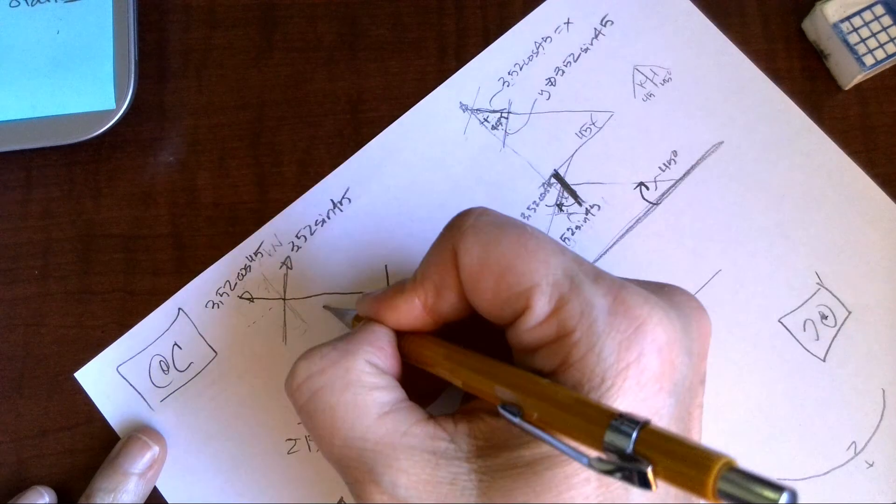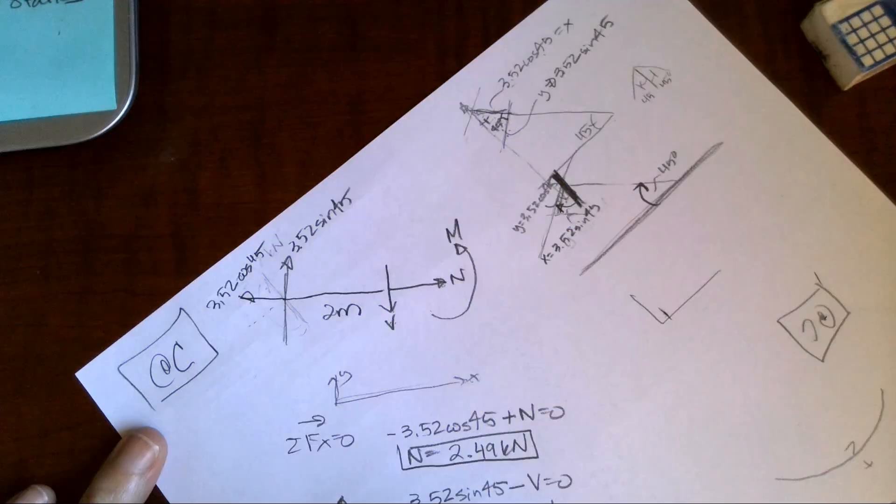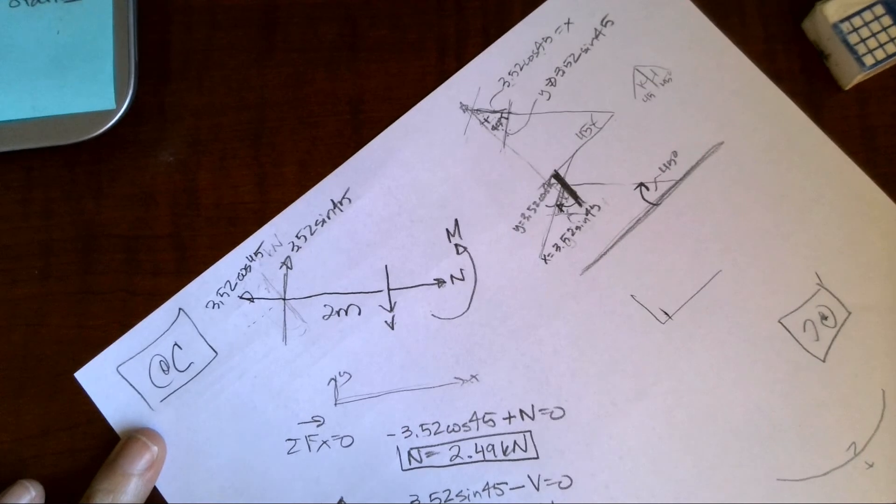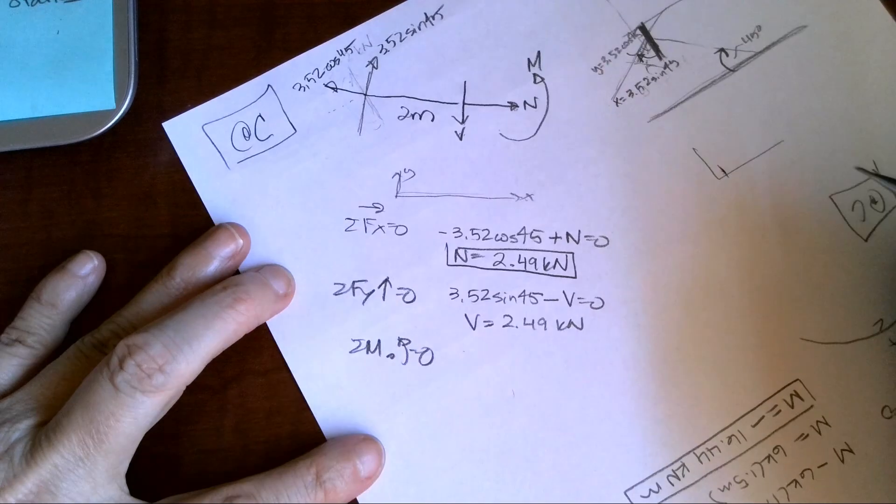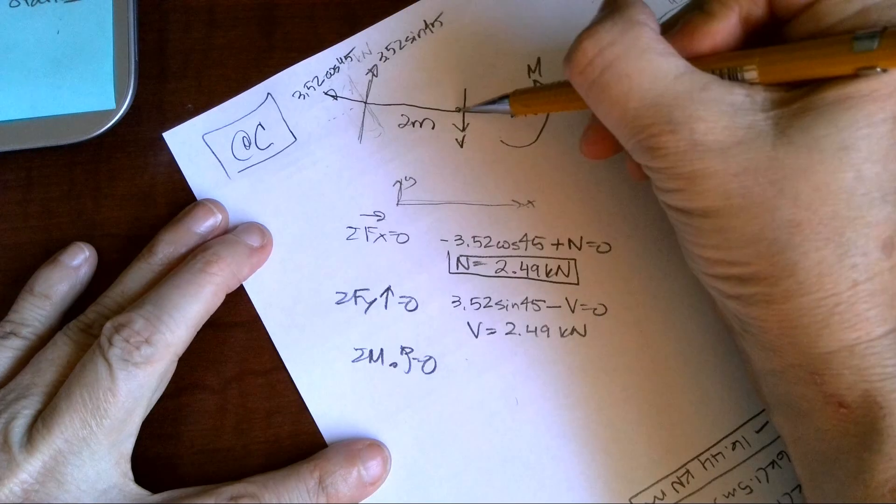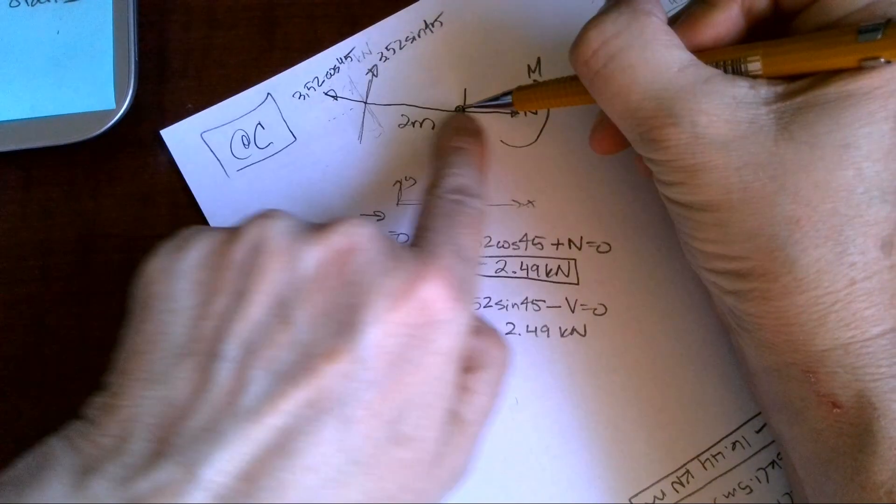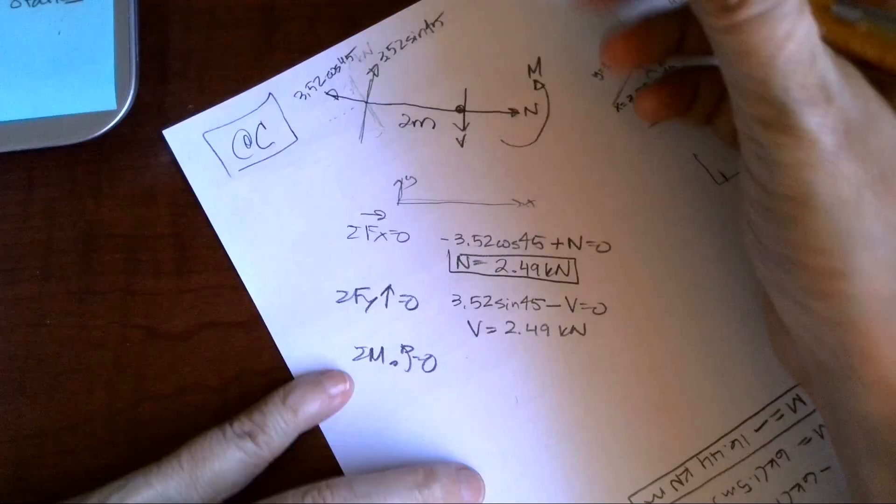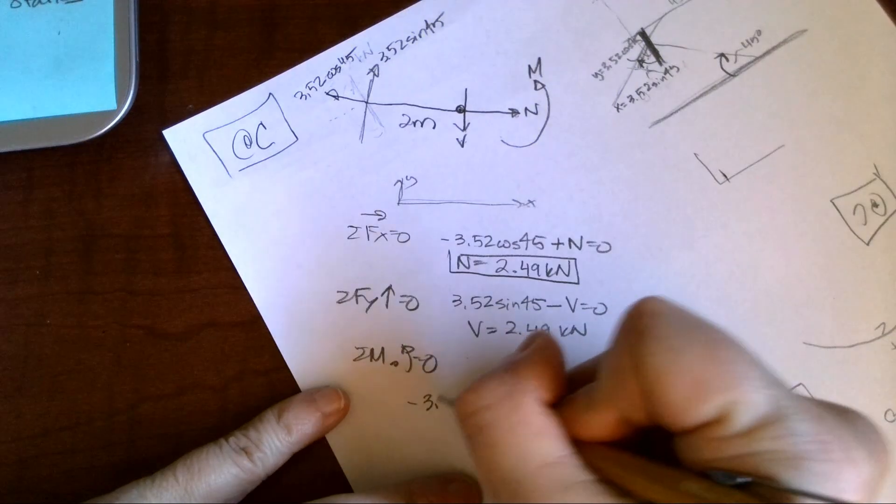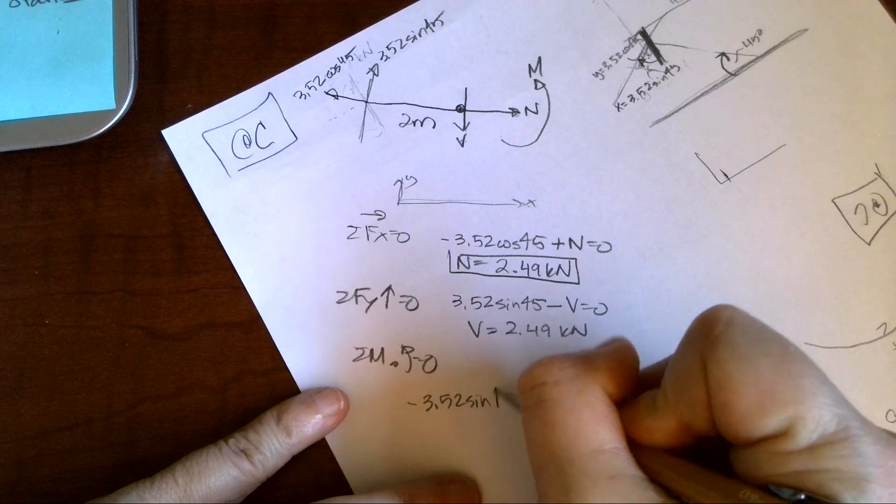Now when I sum the moments about my cut, the x component, the normal goes straight through, it's just pulling or pushing. This shear right here is going to cause negative 3.52 sine 45 times 2 meters.